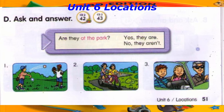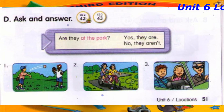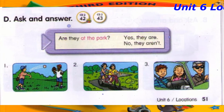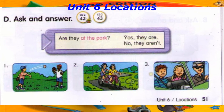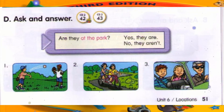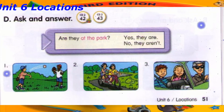Track 43. D. Ask and answer. Number 1: Are they at the park? Yes, they are. Number 2: Are they on the train? No, they aren't. Number 3: Are they in the car? Yes, they are.